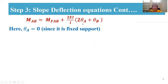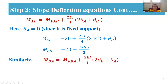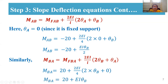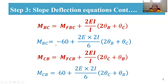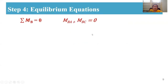Since support A is a fixed support, theta_A = 0. Substituting this boundary condition into the slope deflection equations, M_AB simplifies to −20 + EI·θ_B/2, and M_BA simplifies to 20 + EI·θ_B. Similarly, slope deflection equations for spans BC and CB are derived with theta_b and theta_c as unknowns, after substituting the fixed end moments.